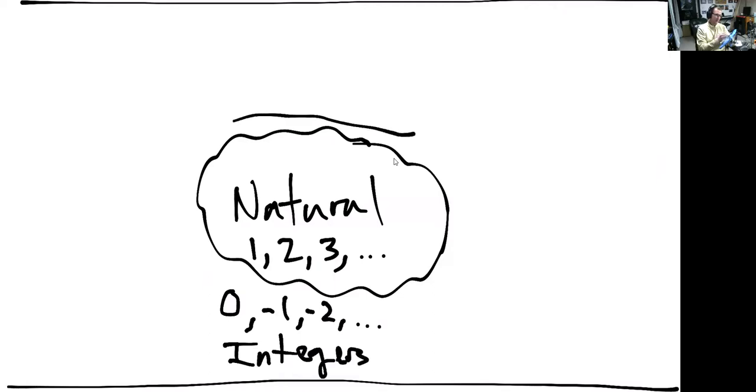So these include all the natural numbers, but they also add in zero and the negatives of the naturals.